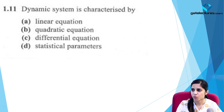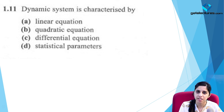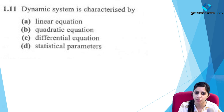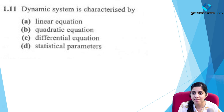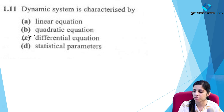To characterize a dynamic system we use differential equations. A dynamic system has memory — it retains values of the past or references the future — and is not limited to the same instant of time. We have already seen a similar question, so no further discussion is needed here.